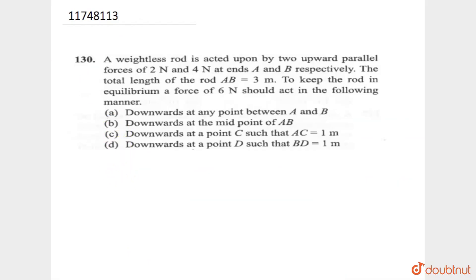So, in this question, what do we have to say? This question is that a weightless rod is acted upon by two upward parallel forces, two and four, at A and B respectively. So, this is a rod. This is a point A, this is a point B.